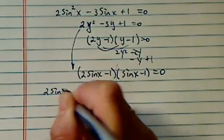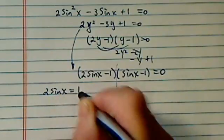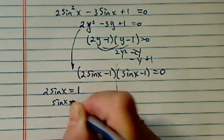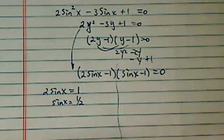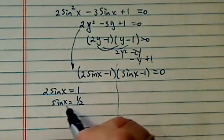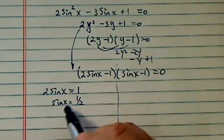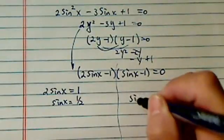For this half, I have 2 of sine equal to 1, so sine x basically equal to 1 half. I'm looking for a solution between 0 to 2 pi, such that sine of x equal to 1 half. And on this side, I'm looking for sine of x equal to 1.